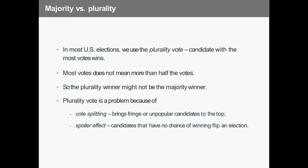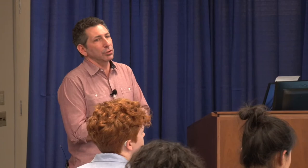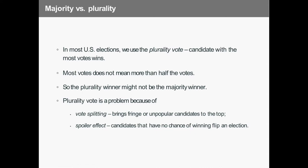What we just did is called a plurality vote, or the first-past-the-post method — the person who has the most votes wins. This is how we vote in most of our most important elections: primary elections in most states, presidential elections, gubernatorial and mayoral elections. It is a mathematical monstrosity. The problem is that a plurality winner might not be the majority winner. This creates two famous issues: vote-splitting and the spoiler effect.